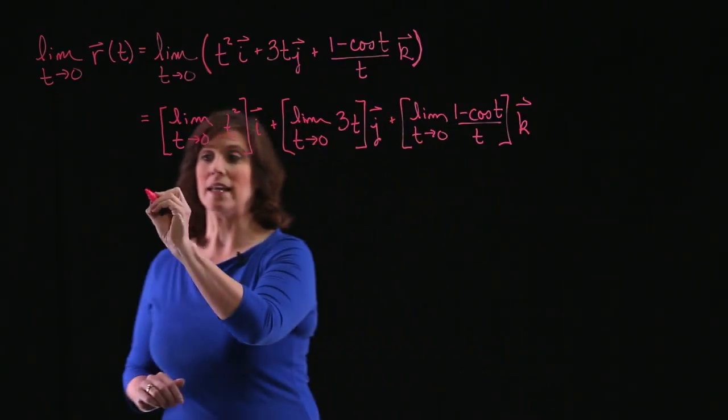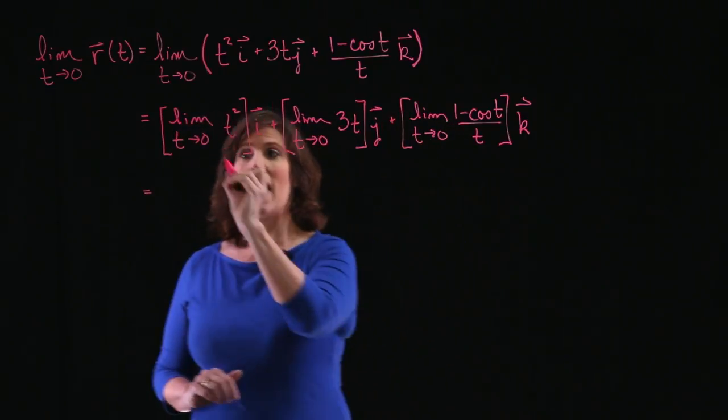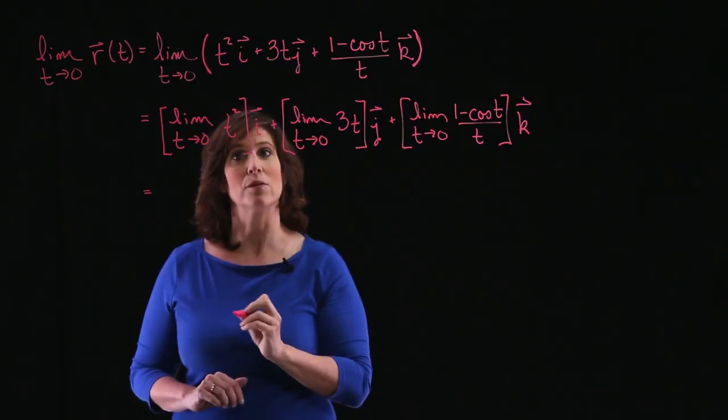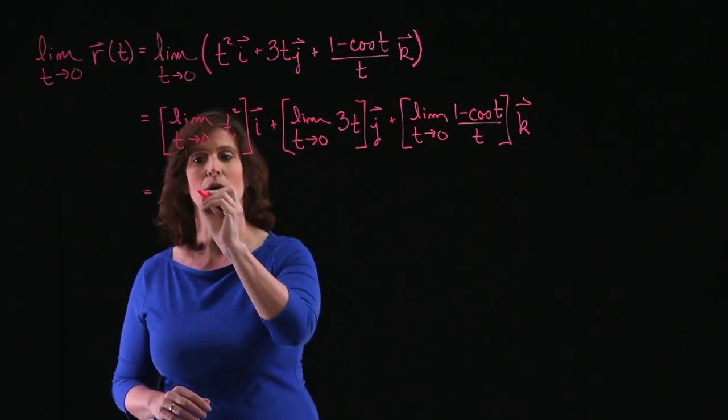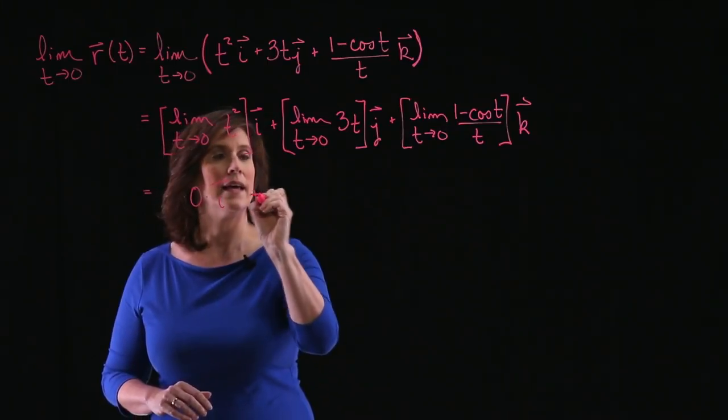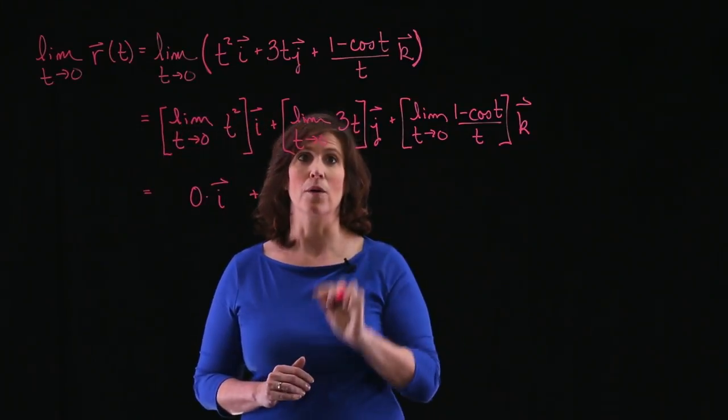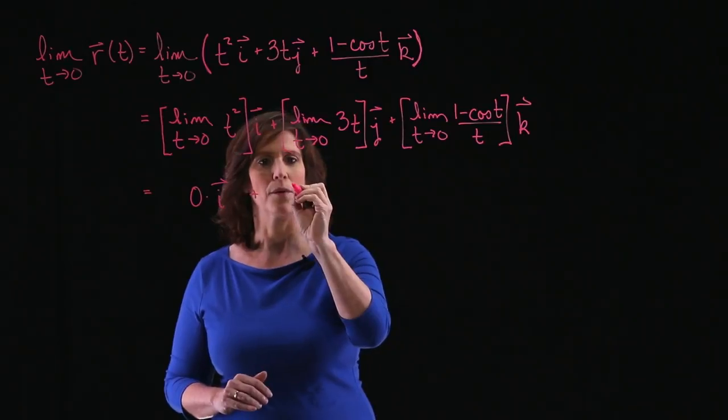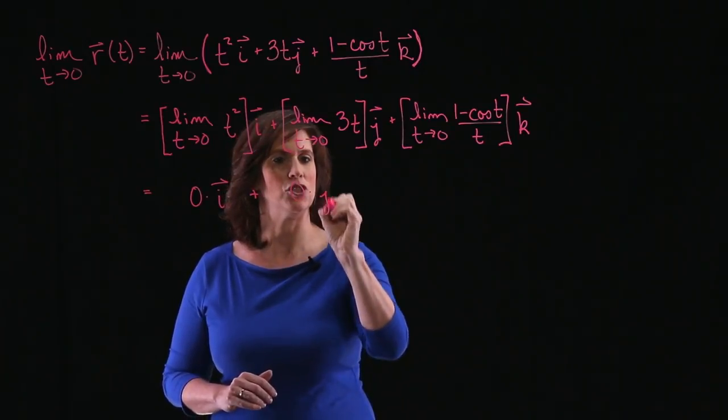OK, now when I go to evaluate each of these individual limits, I notice that as t approaches 0, t squared also goes to 0. So this will be 0 times i. My second limit as t approaches 0, 3t also approaches 0. So this is 0 times j.